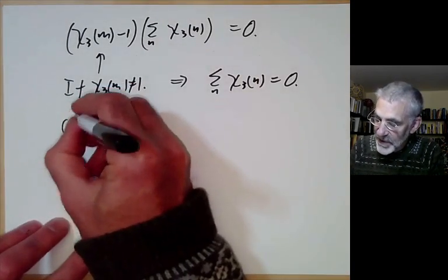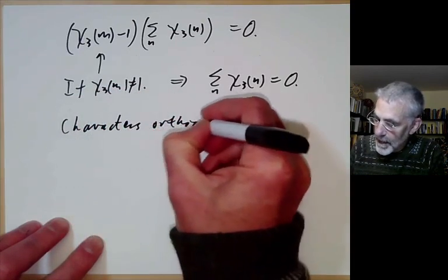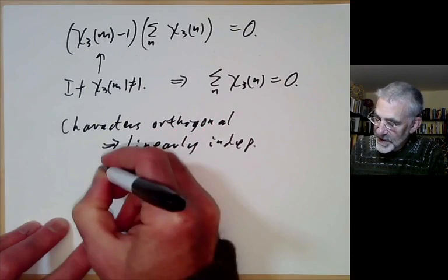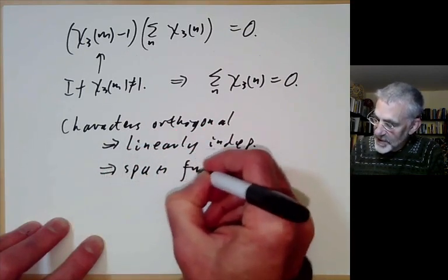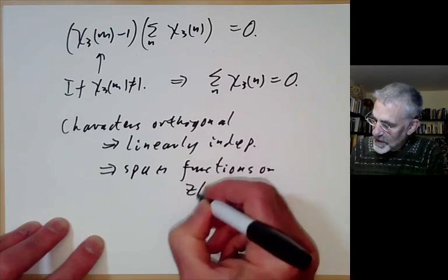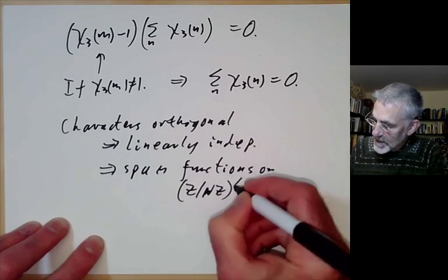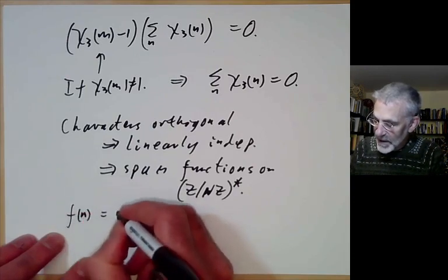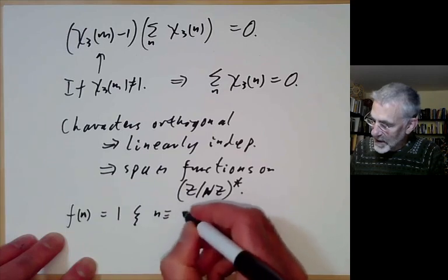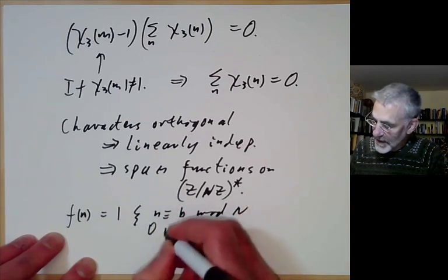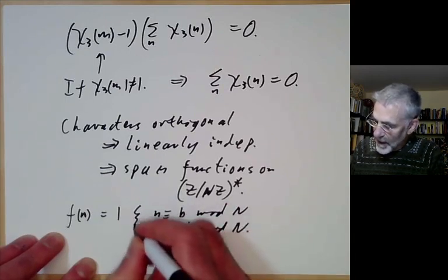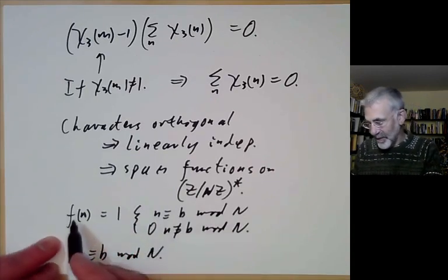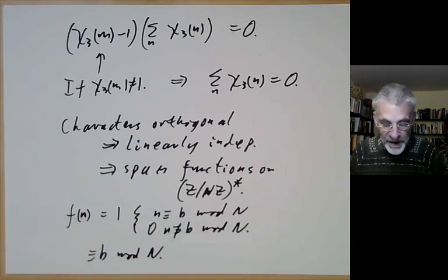Since the characters are orthogonal, they are linearly independent, which implies they span the space of all functions on Z modulo nZ star. We'll use this by taking the function f of n equal to 1 if n is congruent to b modulo N and 0 otherwise, and expressing it as a linear combination of characters to show there are infinitely many primes congruent to b modulo N.